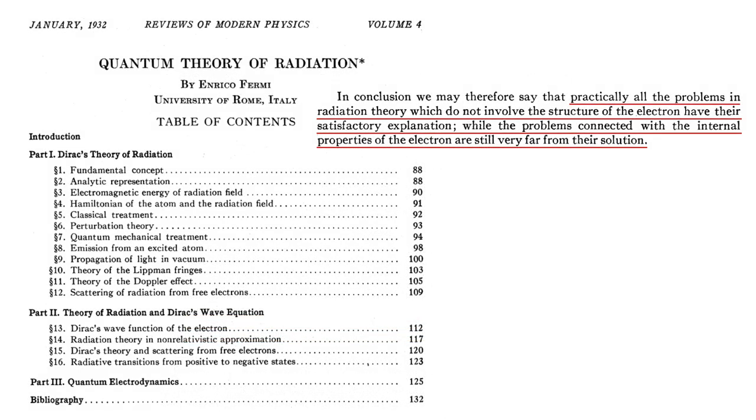Oppenheimer's work was, in part, responsible for Fermi concluding his seminal 1932 review of the then-current state of the quantum theory of radiation with the statement: Practically all the problems in radiation theory which do not involve the structure of the electron have their satisfactory explanation, while the problems connected with the internal properties of the electron are still very far from their solution.